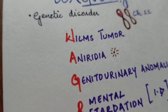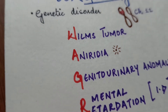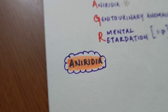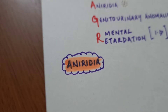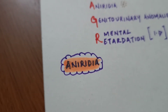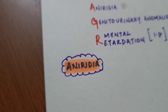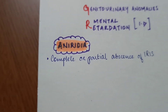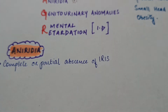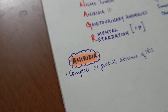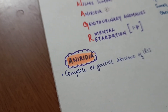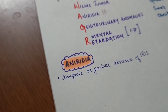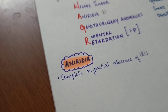The most specific feature of WAGR syndrome is aniridia. Aniridia is the complete or partial absence of the iris — the colored part of the eye. It is present at birth, so usually the first presenting feature in a patient with WAGR syndrome is aniridia.